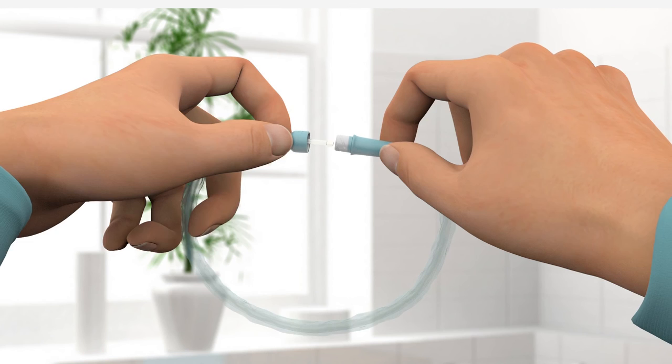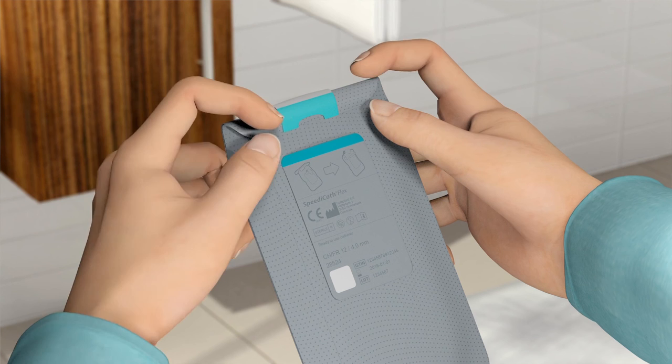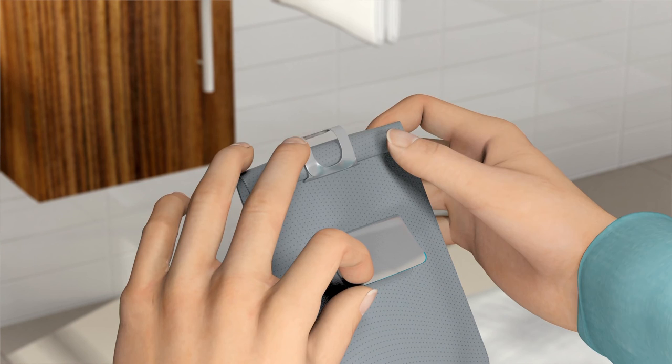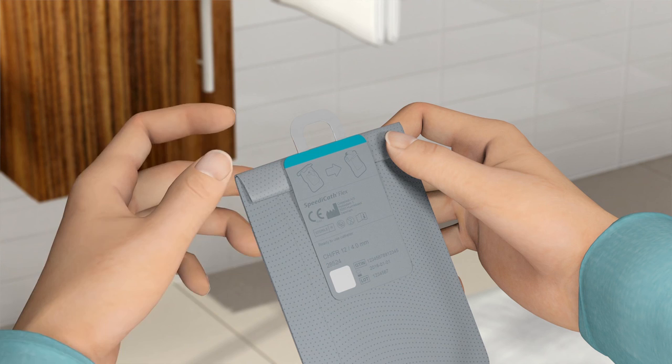Twist the lock to seal the catheter. Then put the catheter back into the packaging and close it by folding the flaps and sealing with the sticker. You can dispose of the catheter and the packaging in your household rubbish. Do not flush it down the toilet.